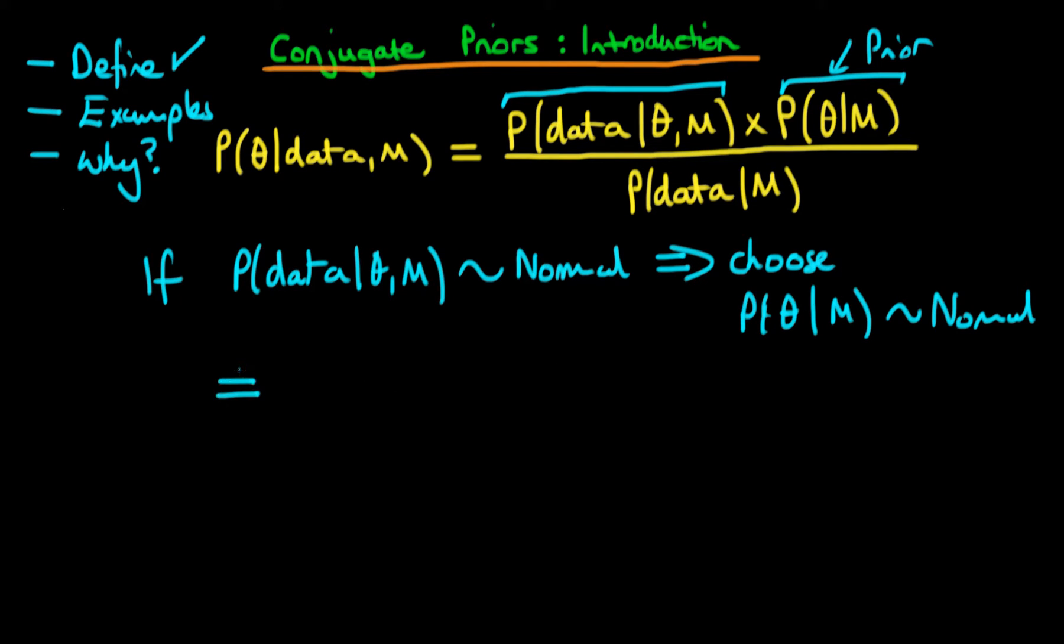then it turns out if we pick this particular distribution for the prior, then the posterior, which remember is the goal of Bayesian inference, then it happens to be the case, after you do quite a bit of mathematics, that the posterior in this case also turns out to be normal. And note that the posterior here being normal and being of the same form as the prior isn't necessarily the case if I was to choose a different prior distribution in this particular case.